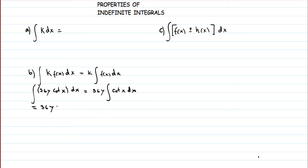The result is 36y times the integral of cot(x), which is the natural log of sine(x). So we get 36y · ln|sin(x)|. This means that if you find the derivative of this expression, you get back cot(x).